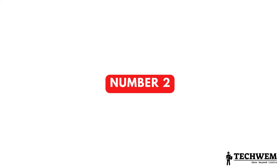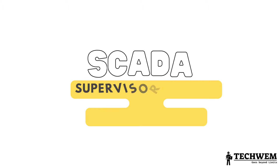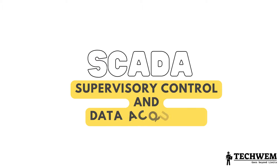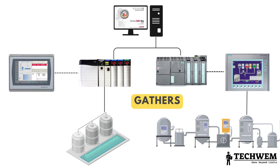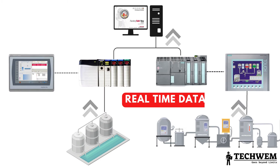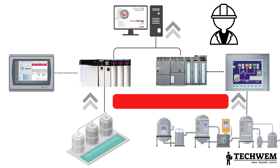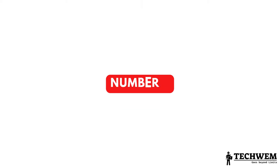Number 2: SCADA, Supervisory Control and Data Acquisition — a type of ICS that gathers and analyzes real-time data from remote devices, allowing operators to monitor and control industrial processes from a centralized location.